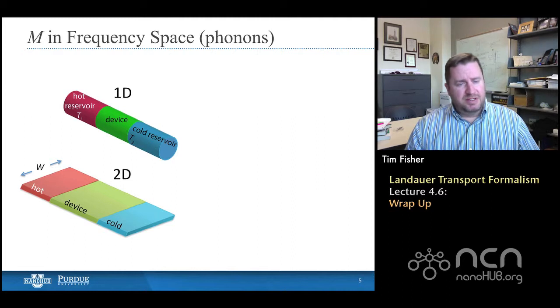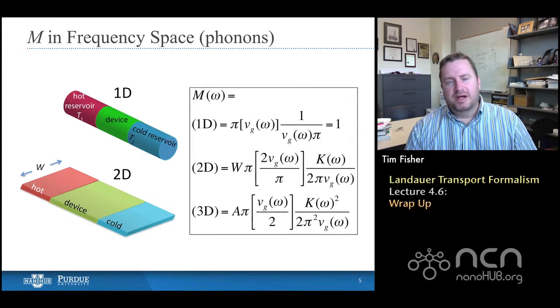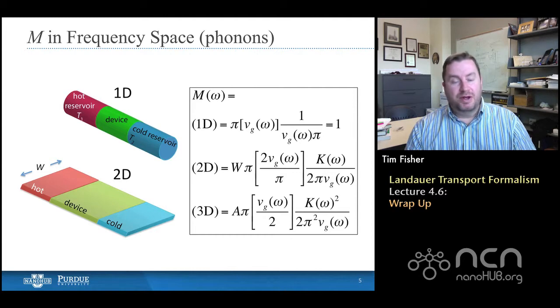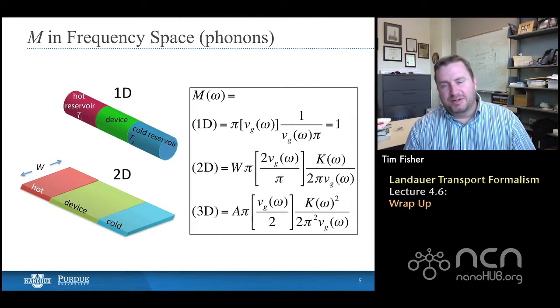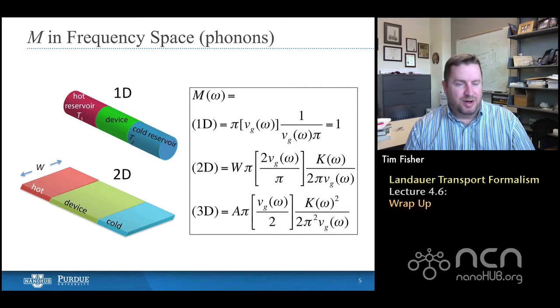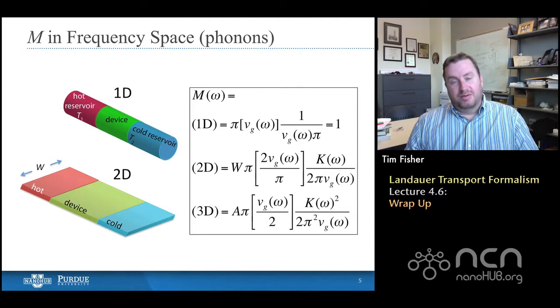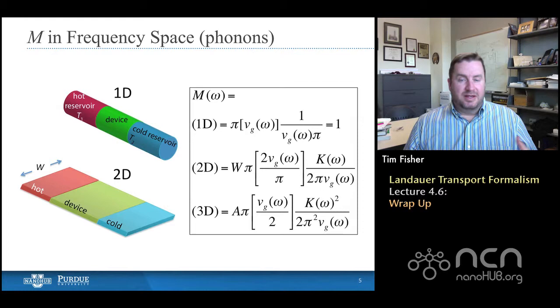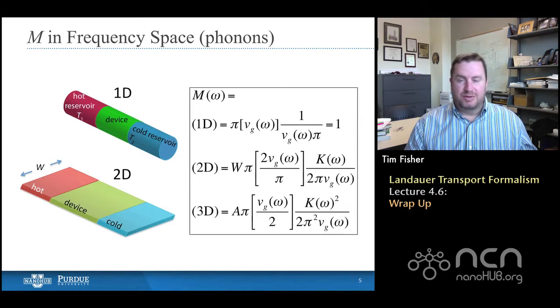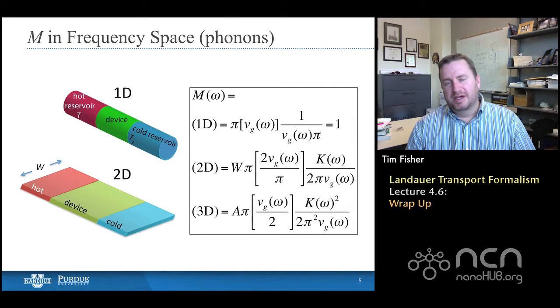So if we have a wider two-dimensional material, then we'll be able to fit more of these half wavelengths in, and so we would expect to have more transport. That's really what M does. And we went through a number of different derivations for different dimensionalities and different carrier types, phonons and electrons.